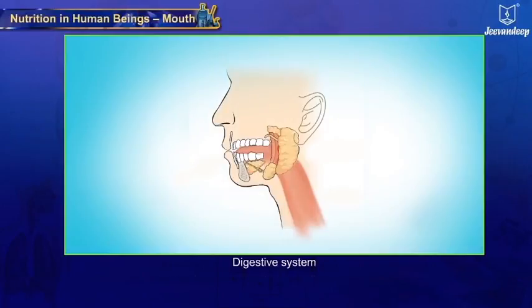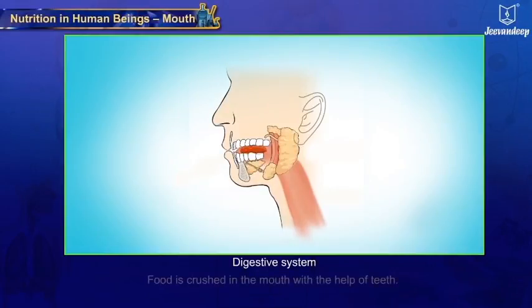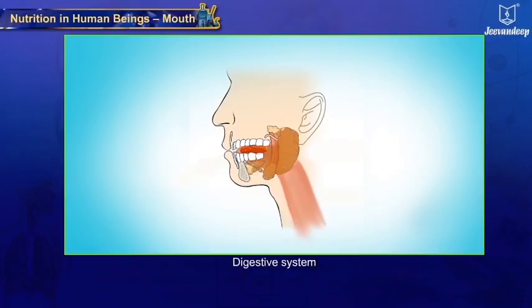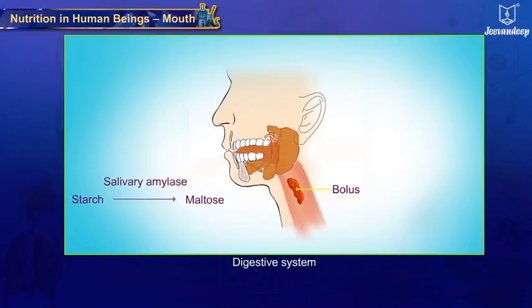Mouth: it is the foremost part of the alimentary canal. Food is crushed here with the help of teeth. Salivary glands secrete saliva which helps in crushing and converting the food into the form of a bolus. Saliva contains an enzyme called salivary amylase, which partially digests starch — breaking down complex molecules of starch into simpler molecules of maltose. Thus, digestion starts in the mouth.